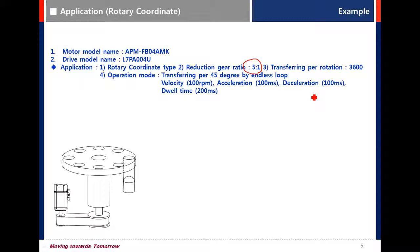The sequence is transferring for 45 degrees by endless loop. Velocity is 100 RPM, acceleration and deceleration are 100 milliseconds. Dwell time is 200 milliseconds. Let's set the parameters.